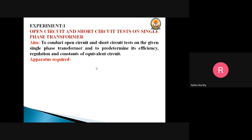In the open circuit test, one of the windings will be kept open-circuited and the rated voltage at rated frequency will be applied to the other winding. If measurements are made on the HV side, the voltage required would be inconveniently large and the current I₀ would be inconveniently very small. That is why the primary side is kept as the high voltage side and the secondary LV side is kept open.